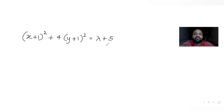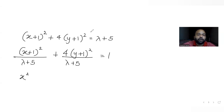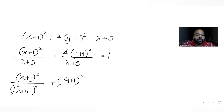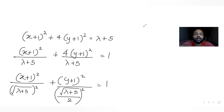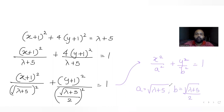This gives us (x + 1)²/(λ + 5) + 4(y + 1)²/(λ + 5) = 1, which we can write as (x + 1)²/(√(λ+5))² + (y + 1)²/(√(λ+5)/2)² = 1. Comparing with the standard form x²/a² + y²/b² = 1, we get a = √(λ + 5) and b = √(λ + 5)/2.